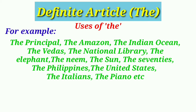With superlative and ordinal numbers. To refer to people or objects that are unique. With decades and centuries. With countries that have plural names. With countries that have the words republic, kingdoms, or states. Before proper adjectives if they refer to a whole group of people or specify the class of a particular item. With family names and before the names of musical instruments.